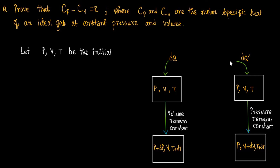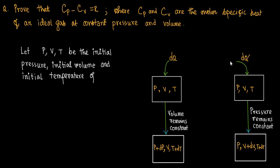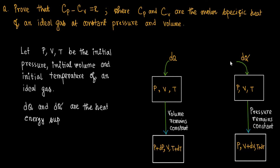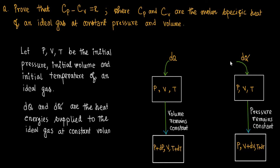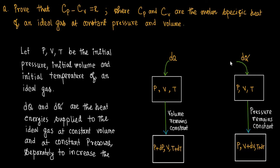Let P, V, and T be the initial pressure, initial volume, and initial absolute temperature of the ideal gas. DQ and dQ prime are the heat energies supplied to the ideal gas at constant volume and constant pressure, respectively.